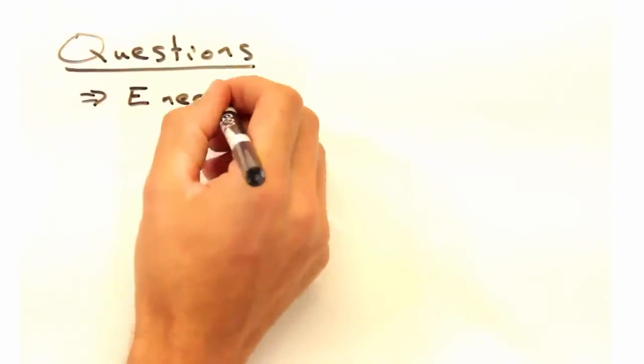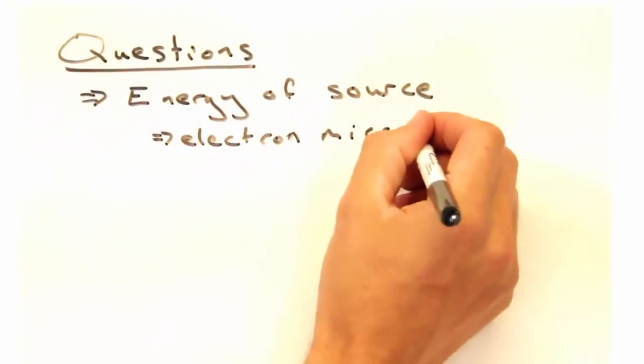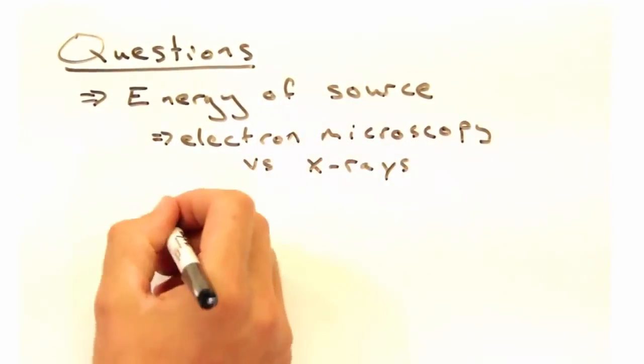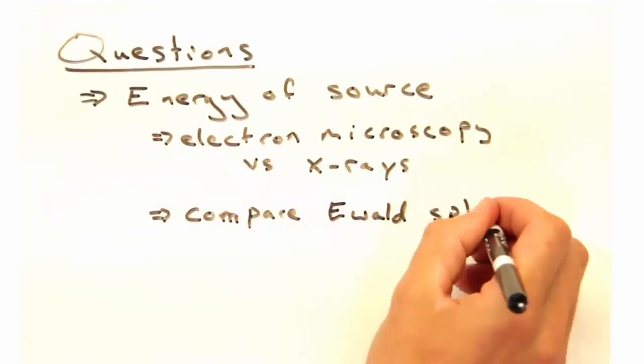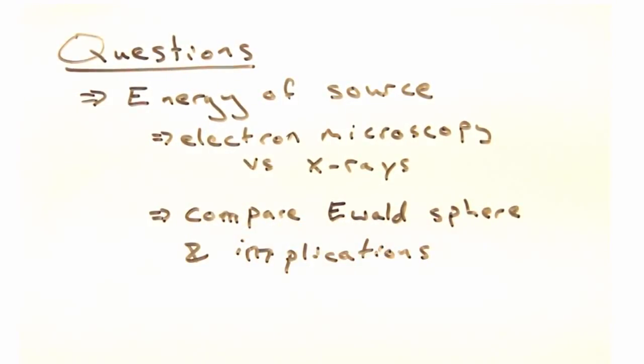And second, in electron microscopy, the energy of the source is typically much higher than for x-ray diffraction. How would an Ewald Sphere created from electrons compare to one from x-rays?